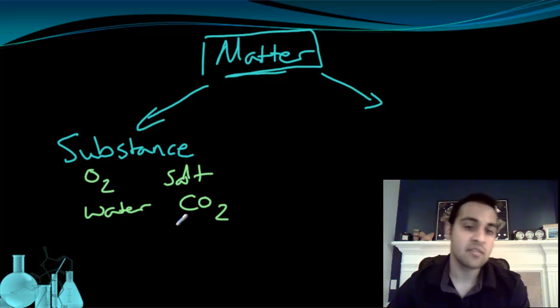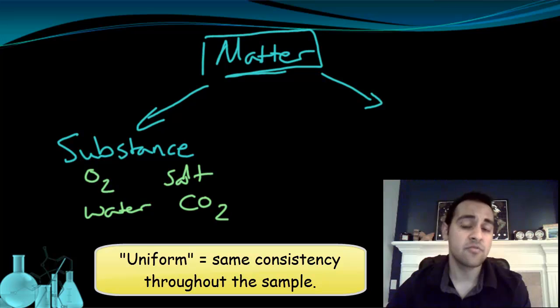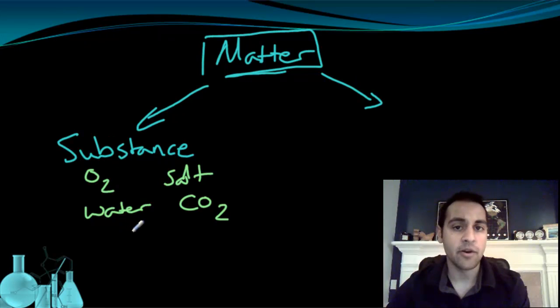Uniformity is kind of a similar idea. Uniformity has to do with consistency, and it basically means the same throughout. This idea of uniformity is going to be very important for this lesson. Let's take a look at it for the water. If we have a sample of water, say our sample is a cup of water, the water at the top of the cup is not going to be any different than the water at the bottom of the cup. It's uniform all the way through. So that's what a pure substance is.